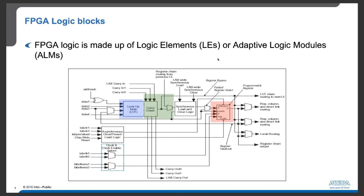We start by introducing FPGA logic blocks. FPGA logic is made up of logic elements, and on top of that, you can find adaptive logic modules available in Intel FPGAs. This diagram illustrates an adaptive logic module. We'll start by looking at the lookup table, which is a key part of it. Other important parts include the carry chain and registers, which we will discuss in the next few slides.